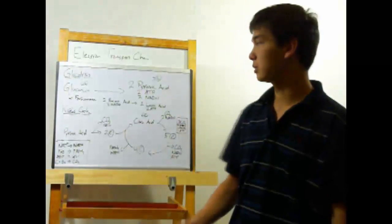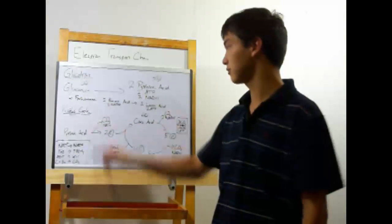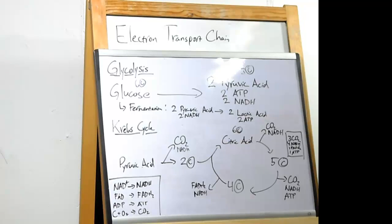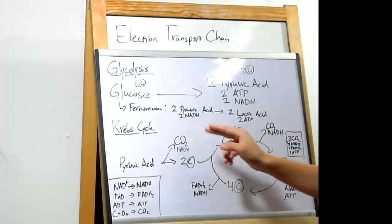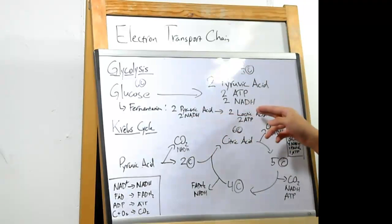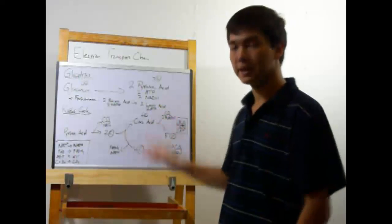Alright, now ordinarily you would move on into the Krebs cycle. But if you don't have enough oxygen, you'll instead move on into fermentation, also known as anaerobic respiration, respiration without air. In this, two pyruvic acids that you just made and the two NADH get converted into two lactic acids and two ATP. This is very inefficient and painful. Two ATP is not that much.